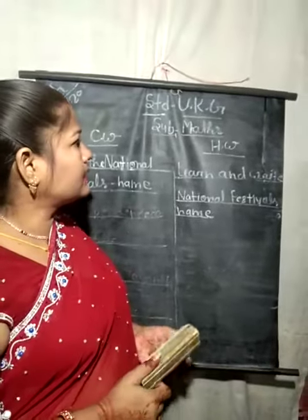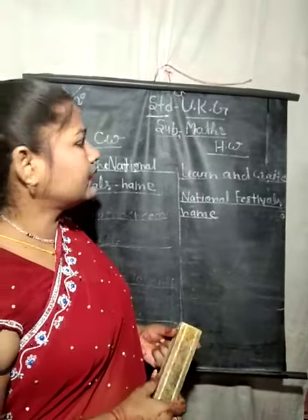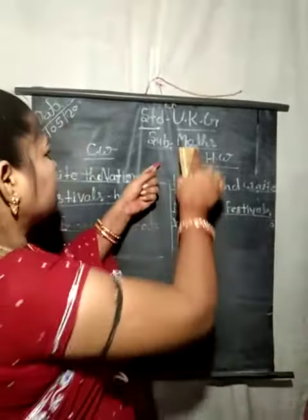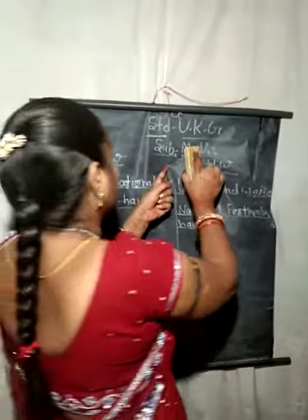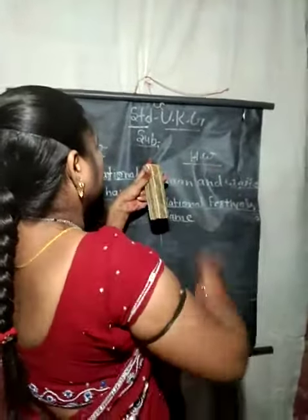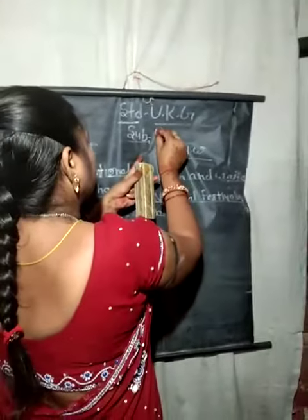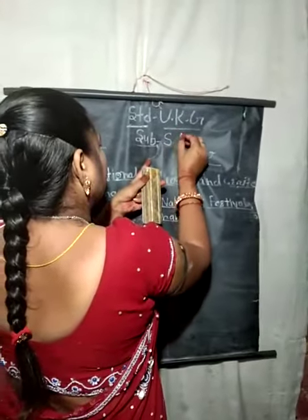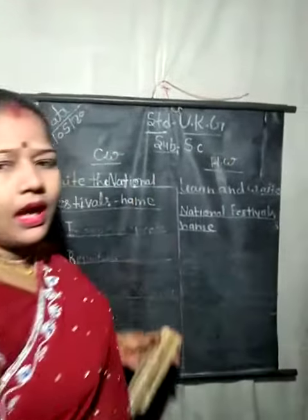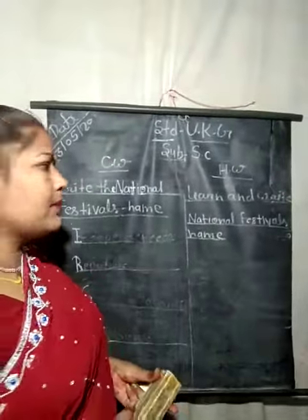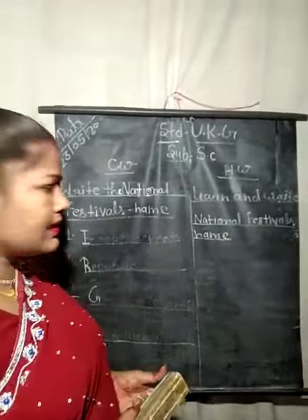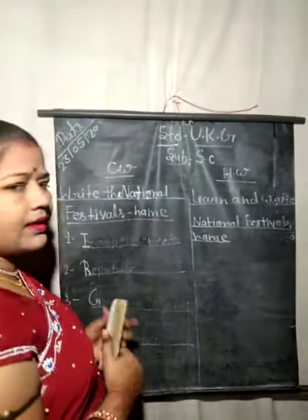Good morning children. This is Alam Tashist and the UKG. My subject is Science. Today in class we will write the National Festival names.